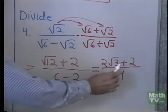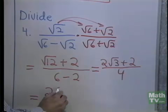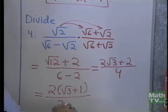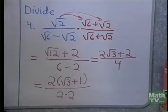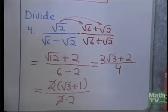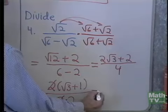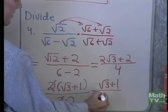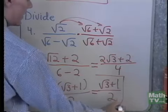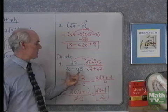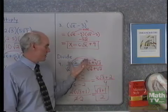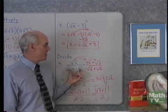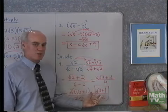So I'll factor a 2 from the numerator: 2 times the quantity square root 3 plus 1, all divided by 4, which I'll write as 2 times 2, so you can see that the common factor of 2 divides out. I end up with square root 3 plus 1, all divided by 2. There are two different kinds of instructions we can have for a problem like this — we can either say divide, so it looks like a division problem, or we can say rationalize the denominator. In either case, this is the way you would proceed, by multiplying numerator and denominator by the conjugate of the denominator.